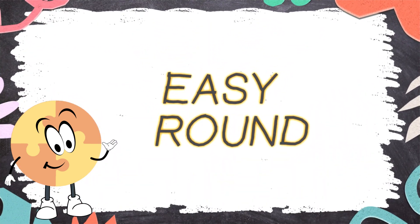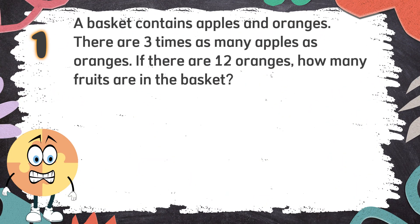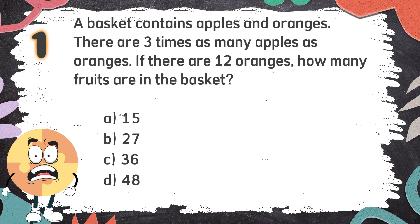Easy Round! Number 1. A basket contains apples and oranges. There are 3 times as many apples as oranges. If there are 12 oranges, how many fruits are in the basket? The choices are: A. 15, B. 27, C. 36, D. 48.